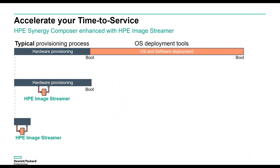Synergy really does save you a lot of time by using Image Streamer to deploy templates. The typical provisioning process requires provisioning the hardware, which actually takes less time than deploying the OS and software. With Image Streamer, the initial hardware deployment is handled by the composer, but Image Streamer handles the operating system and software deployment — shortening that deployment time significantly. And if we need to re-image that server with a new OS version, we don't need to reprovision the hardware; we simply point to the new boot image, and the time required to reconfigure is even shorter.